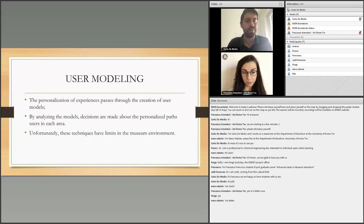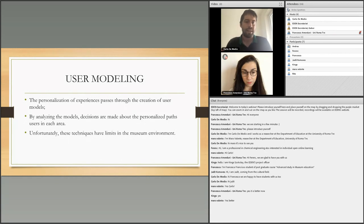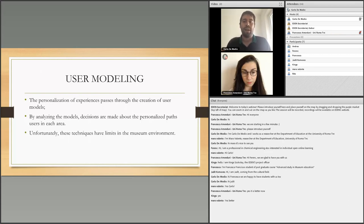But what is a user model? The personalization of experience passes through the creation of a user model. A user model is a computer representation of a person, modeled through a series of features that characterize their personal data and needs. By analyzing a model, a platform can take decisions and recommend personalized paths inside the museum or personalized information for each work present in a museum. Unfortunately, these techniques found in literature have limitations in the museum environment.